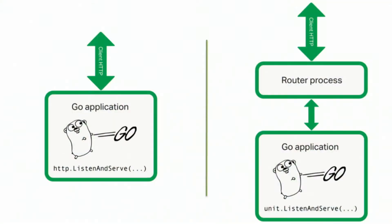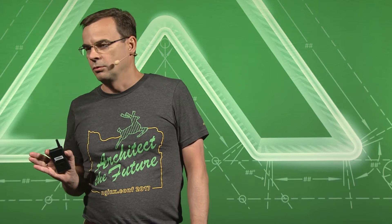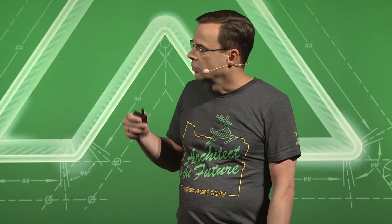Go applications are different animals. Typically, a Go application listens on an HTTP port by itself, and when you build your application, you have to build everything into it, including networking and all management features. With Unit, you can have control over your applications without this additional code. In the case of PHP or Python applications, you do not have to change your code at all — you can run it as is. However, for Go applications, you have to make a tiny change: you have to import the Unit package and change the HTTP package call to Unit.